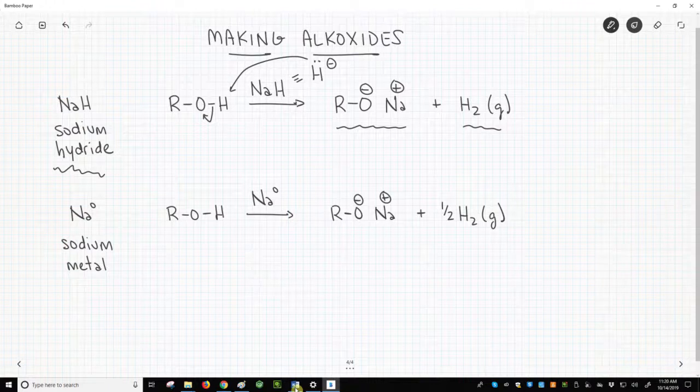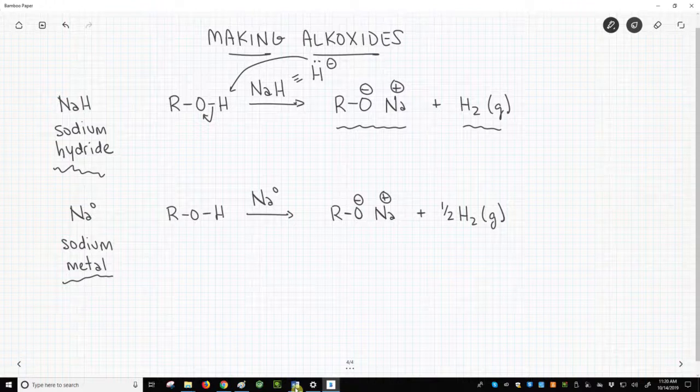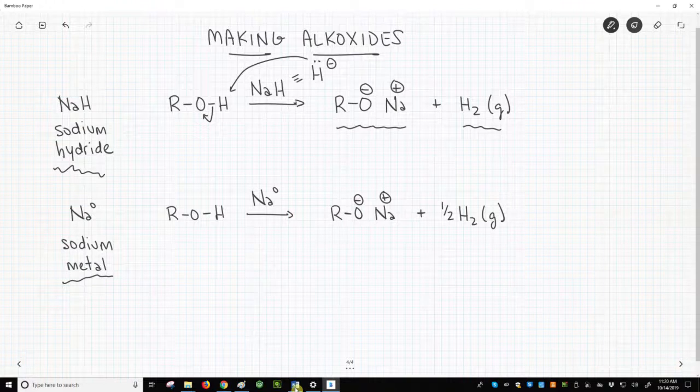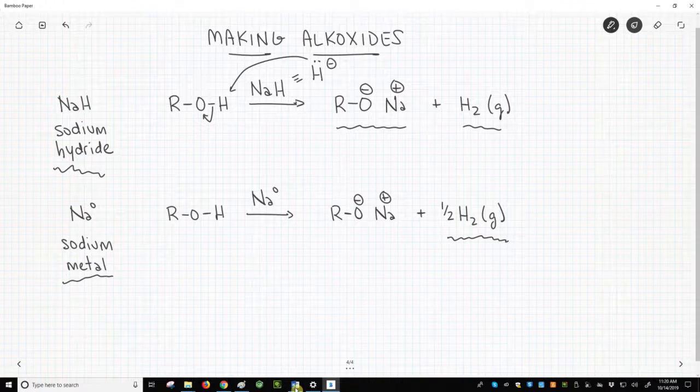The second method is reacting the alcohol with sodium metal. Sodium metal represents sodium in its zero oxidation state, or metallic sodium. Sodium metal reacts with the alcohol to form a half equivalent of H2 gas, which bubbles away and gives the alkoxide.